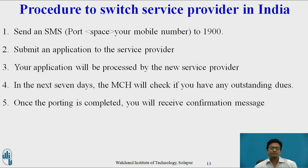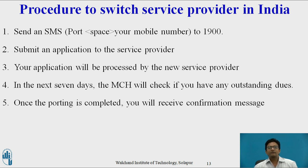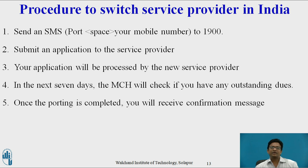The procedure to switch service provider in India: first, send an SMS — PORT followed by your mobile number — to 1900. You will get a reply SMS with a unique porting code from 1901. Next, submit an application to the new service provider where you want to shift, along with your ID proof, address proof, and photograph. Your application will be processed by the new service provider and you will get a confirmation with the porting date. In the next seven days, MCH will check whether you have any outstanding dues and then process your request. Once porting is completed, you will receive a confirmation message and your new service will start on your old number.